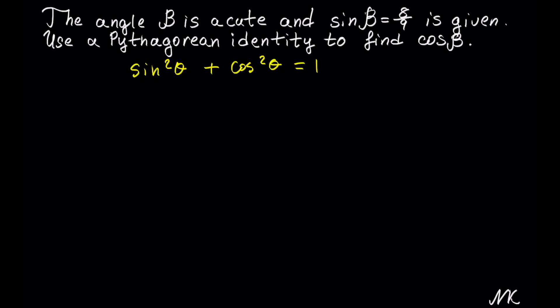We are given that sin β is 8 out of 9, so instead of sine we have (8/9)² + cos² β = 1.